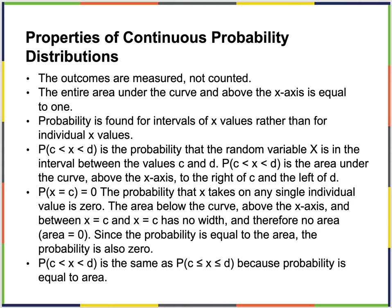The entire area under the curve and above the x-axis is equal to 1. Probability is found at intervals of x. At any individual x, the probability of that specific value — the function value at that point — is 0. So we're always looking at intervals.